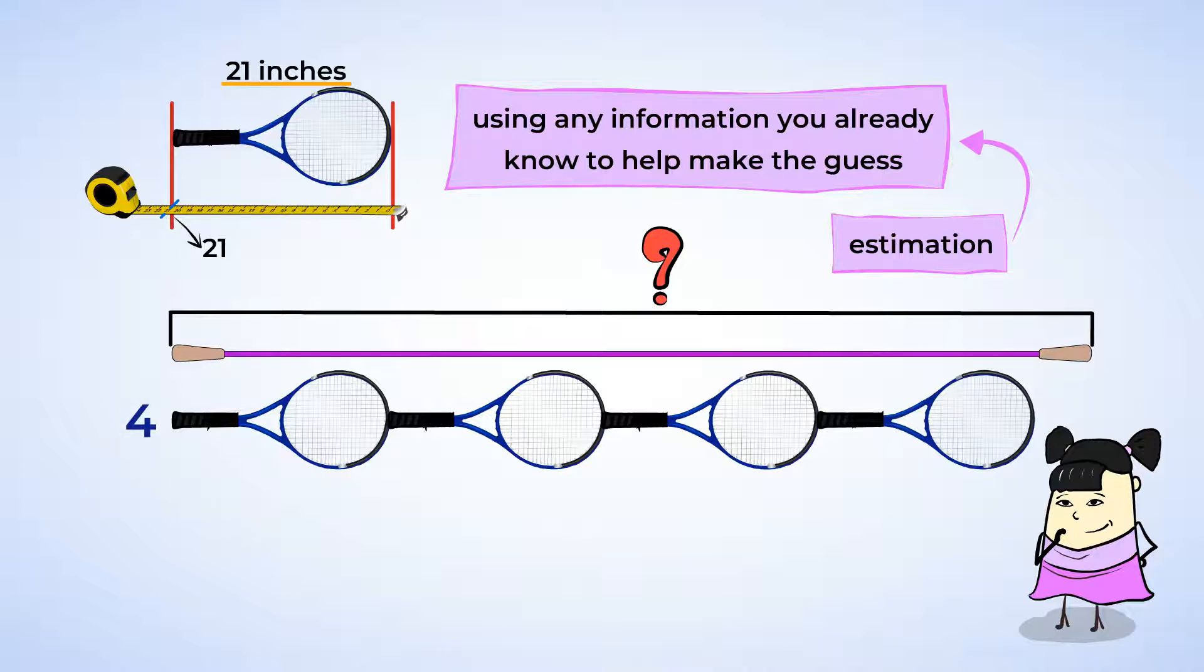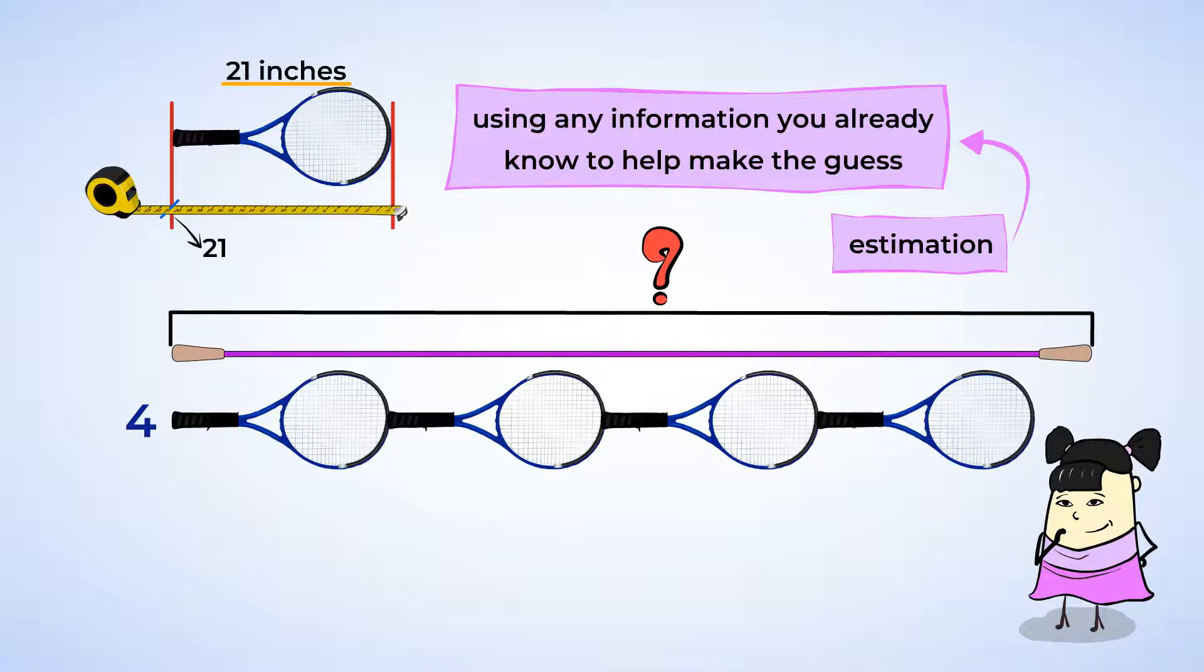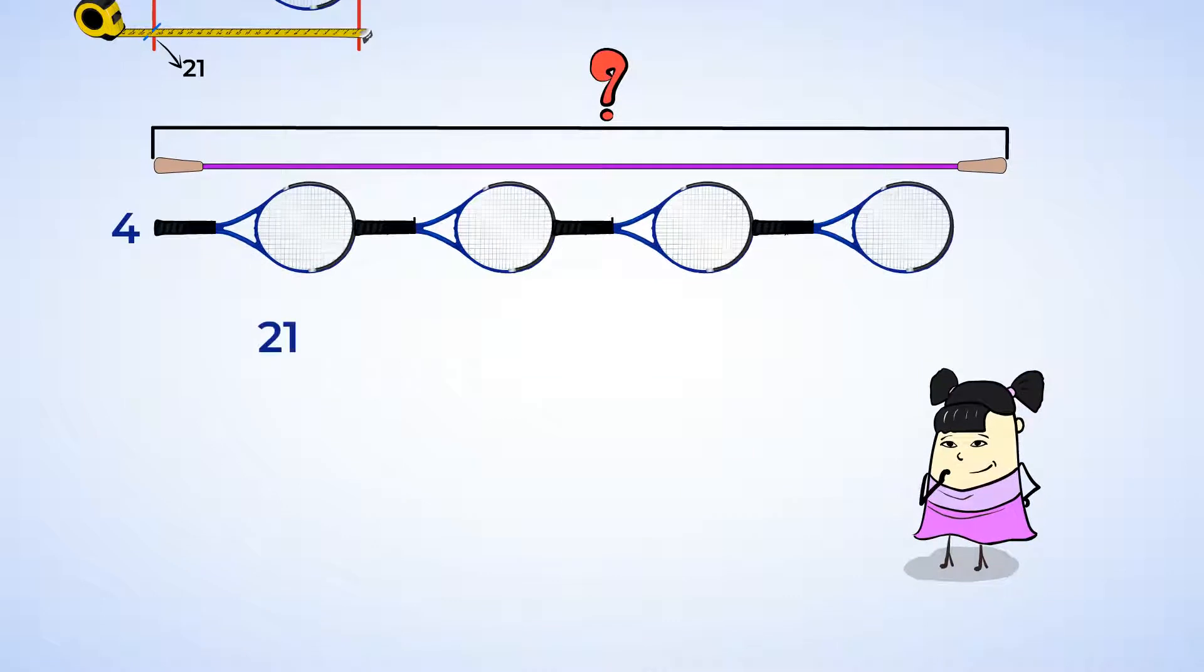If the length of a tennis racket is 21 inches, we need to add 4 times 21. And that is 21 plus 21 plus 21 plus 21. 21 plus 21 is 42, 42 plus 21 is 63, and 63 plus 21 is 84.